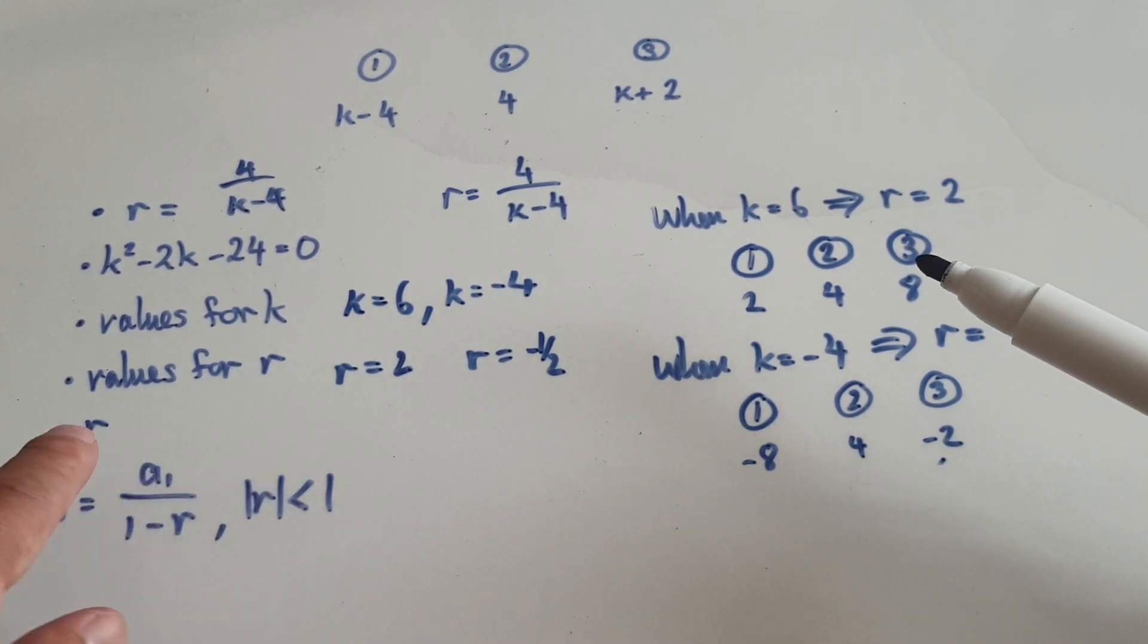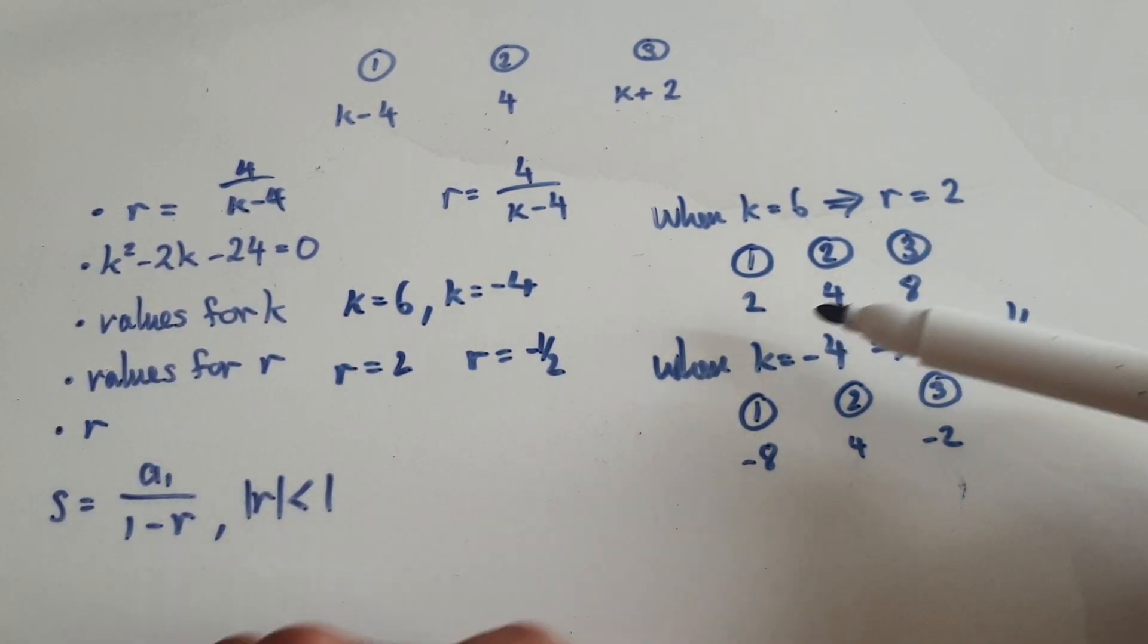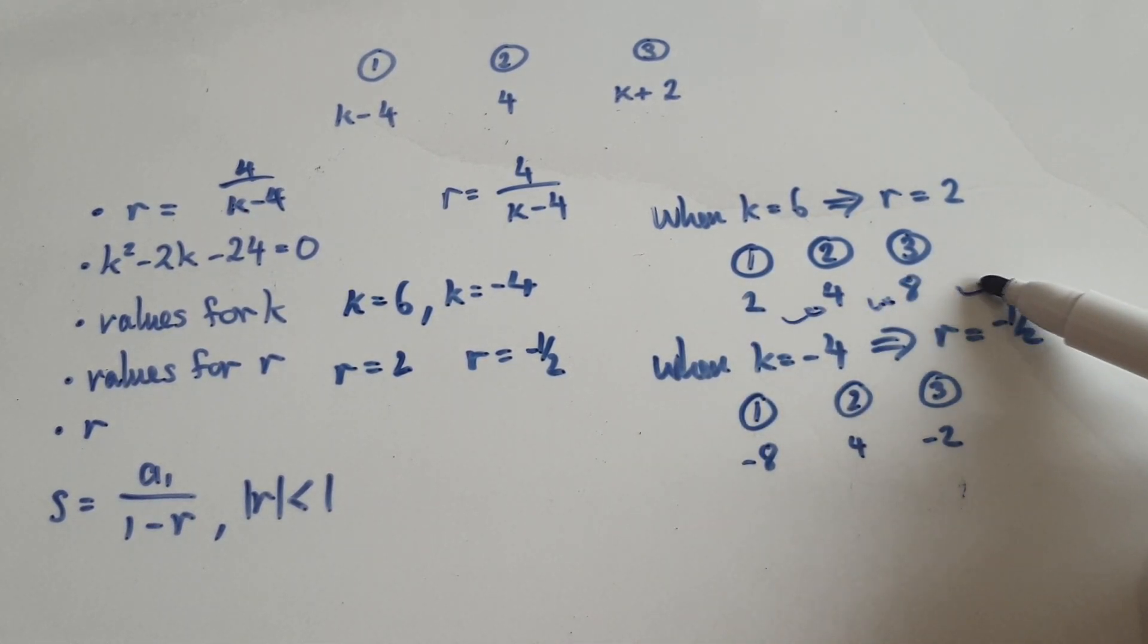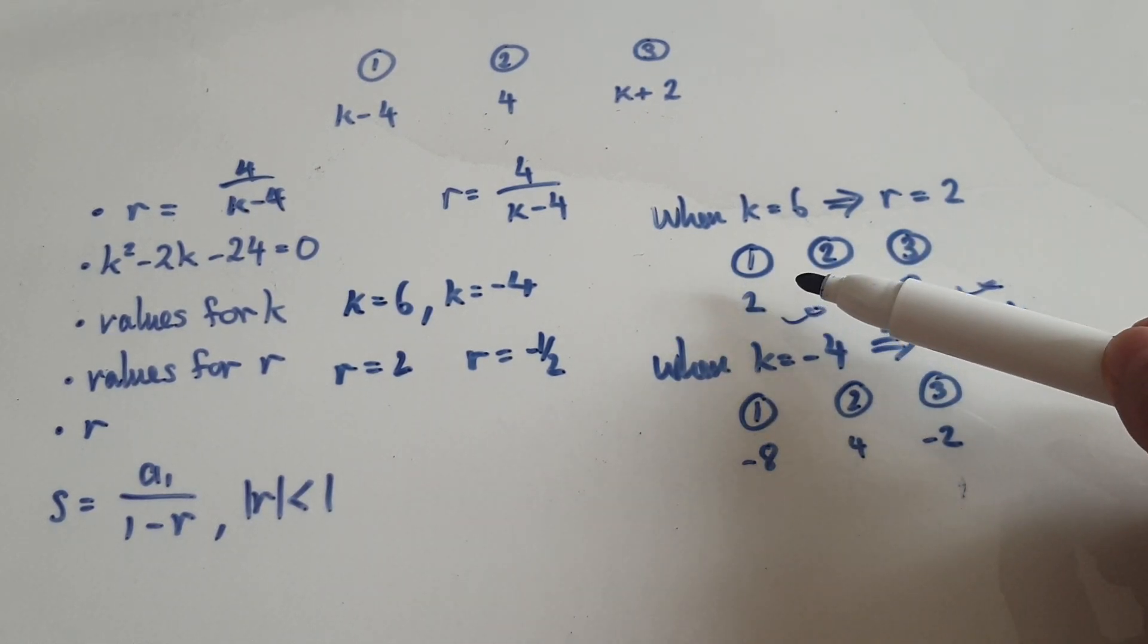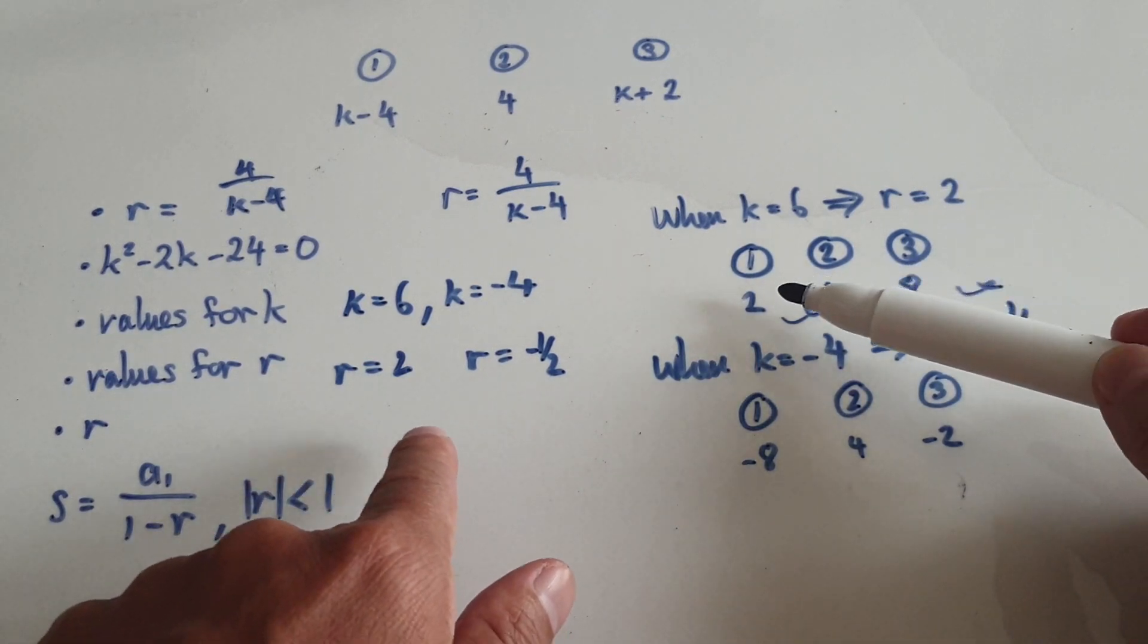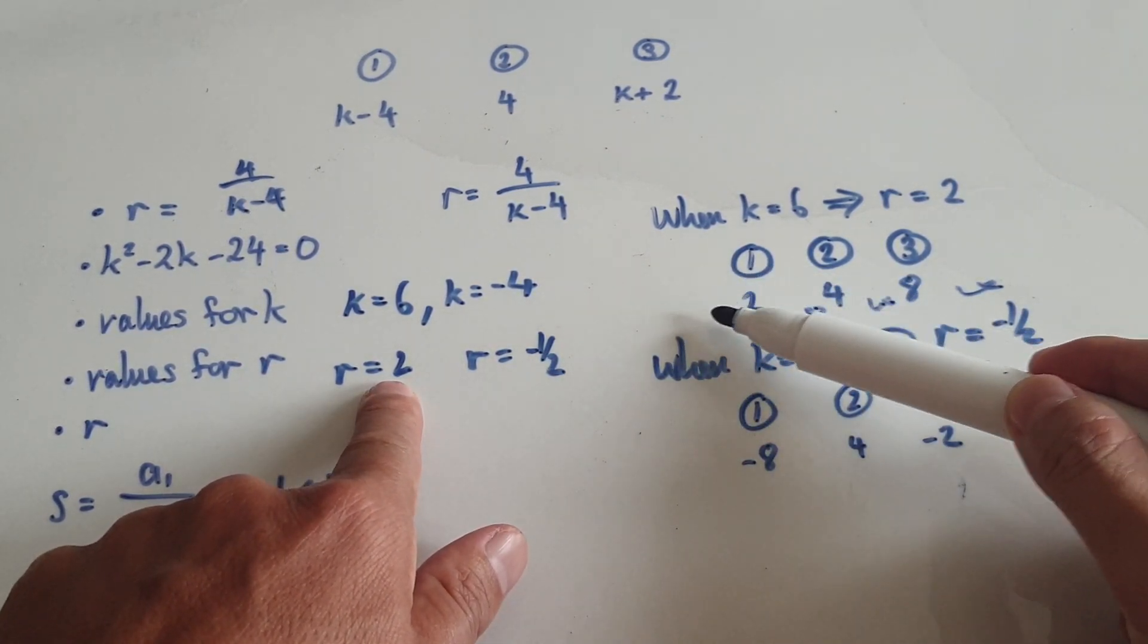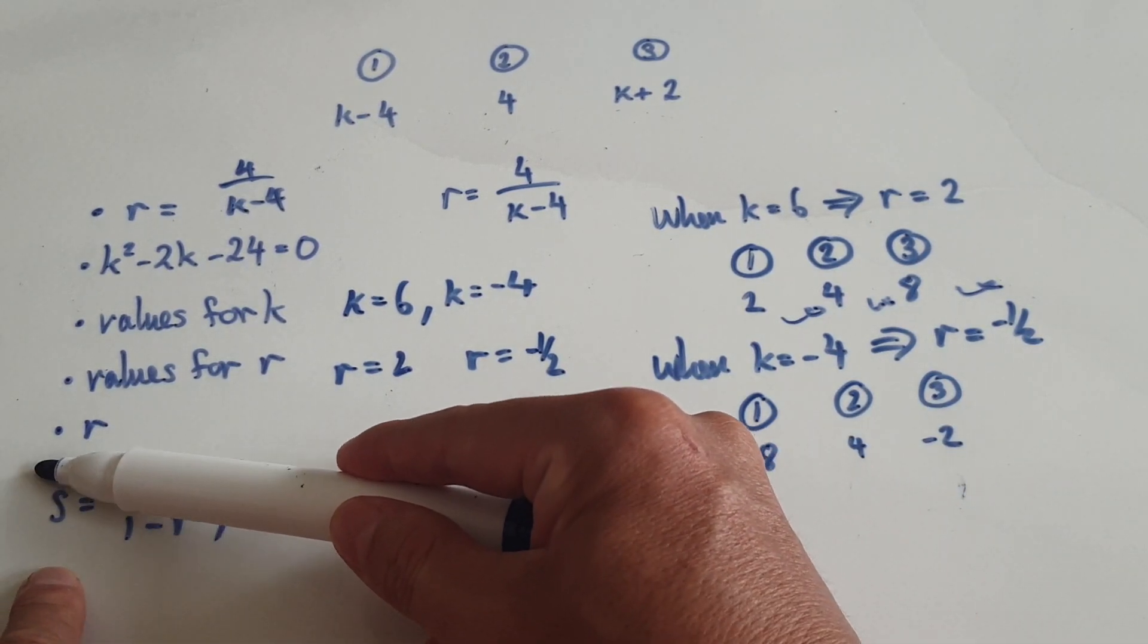So our next step is to find a value of r for which you can sum up the whole series of the whole sequence. Here when you times 2 all the time, you can't actually sum up the whole sequence. The sum would just get bigger and bigger and bigger. So when r is 2, you can't really sum up your sequence.